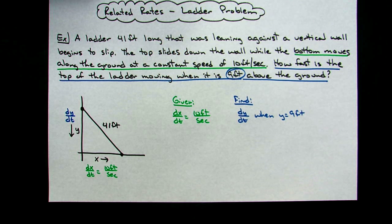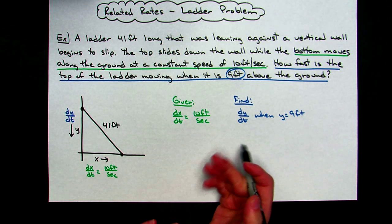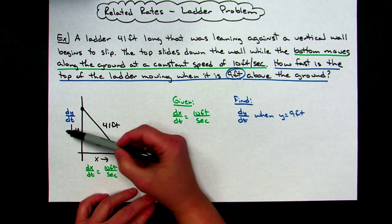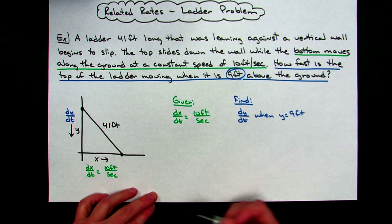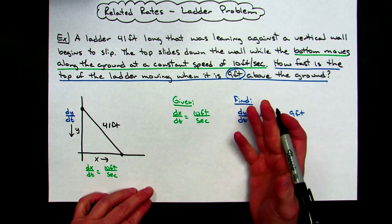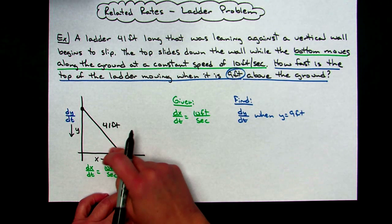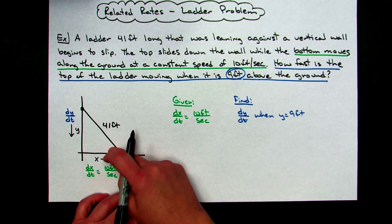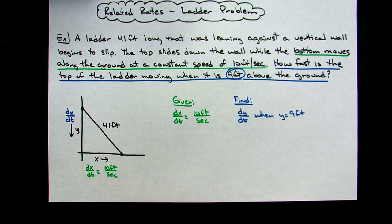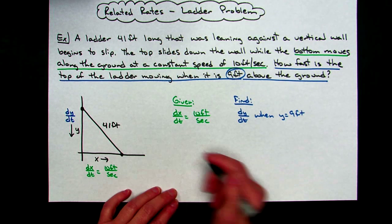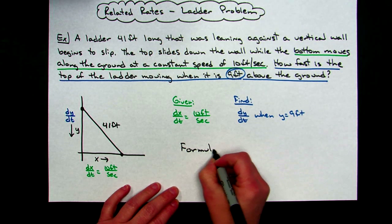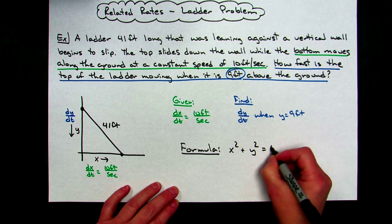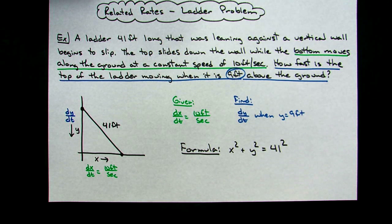Next, I like to determine the geometric formula we'll work with. Every related rates problem needs some type of formula. This is clearly a right triangle with all three sides given, so I'm going to use the Pythagorean theorem. Note: just because it's a right triangle doesn't mean you always use Pythagorean theorem — if you had reference angles you might use right triangle trig. But in this case, the formula is: x² + y² = 41². That's the setup for the entire related rates problem.